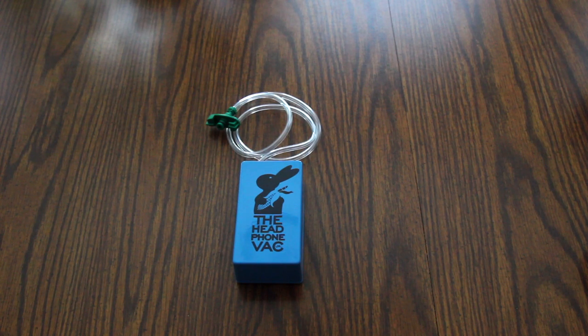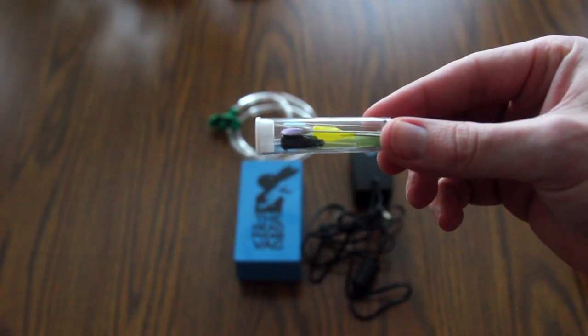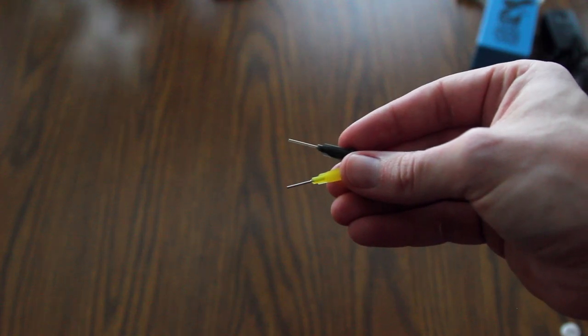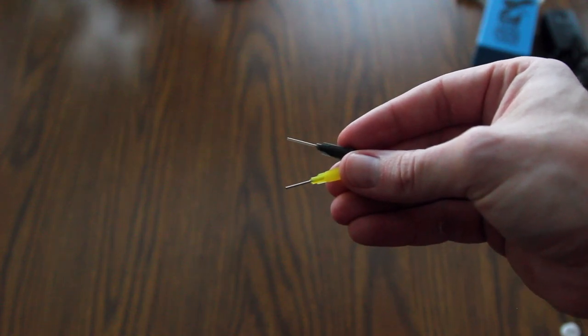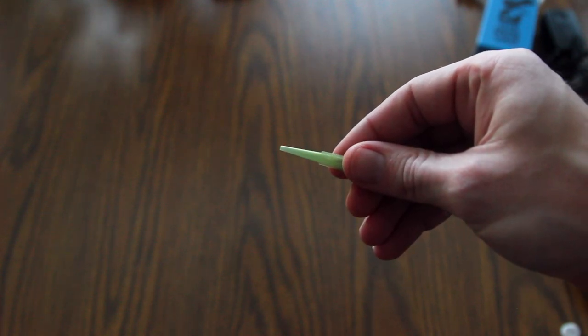When you purchase the headphone vac jr, you'll receive the vacuum, a power adapter, a needle, and different tips you can use to help clean your IEMs. Among the tips included, you get a plastic and metal tip which are perfect for small bores on IEMs, and you get a mesh screen tip which is perfect for single bore IEMs, which is what I personally use.